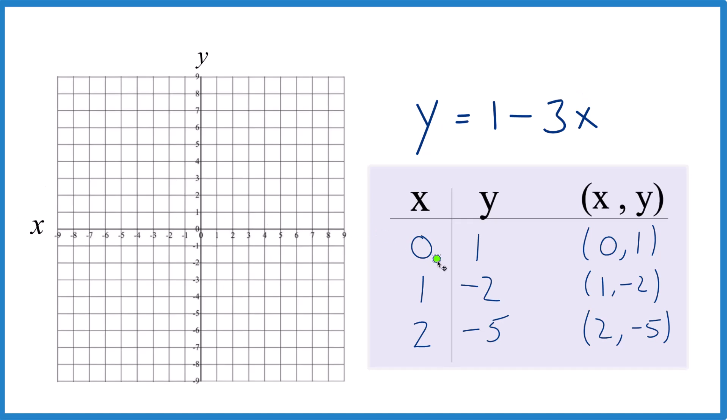So now we just graph them. x is 0, y is 1. Let's do another point. x is 1, y is negative 2. So 1, negative 2.